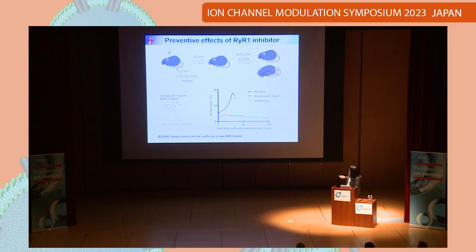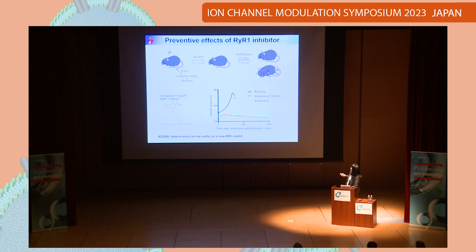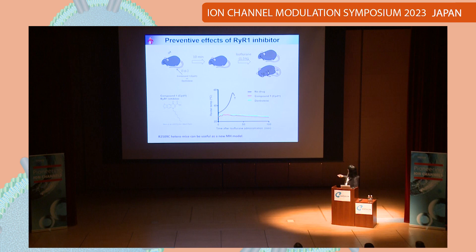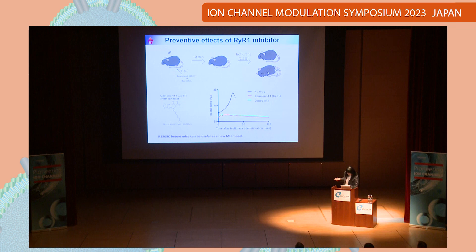Next, we tested the therapeutic effects of RyR1 inhibitors. Compound 1, CPD-1, is a novel RyR1 inhibitor developed by Dr. Murayama at Juntendo University. Compound 1 or dantrolene was injected intraperitoneally. After 10 minutes, isoflurane exposure was started. No drug was given to heterozygous mice in the control condition. On the other hand, when compound 1 or dantrolene was applied, it completely blocked the increase of rectal temperature. So we think these heterozygous mice can be useful as a new MH model.